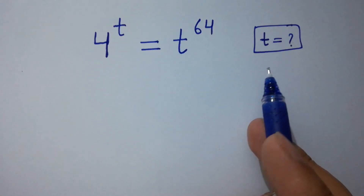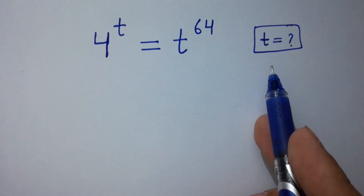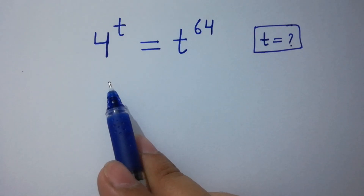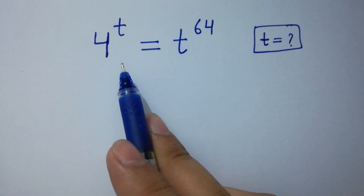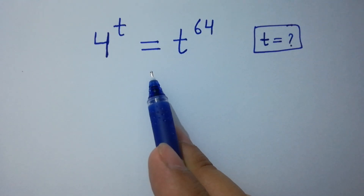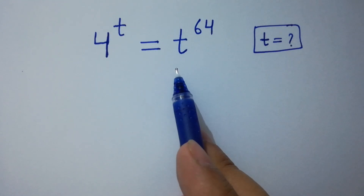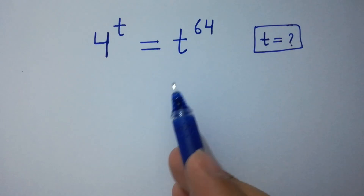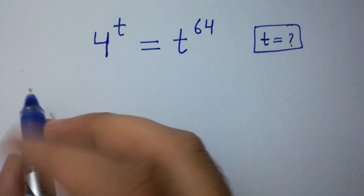Hello friends, find the value of t if 4 to the power t equals t to the power 64. Let's have a solution.